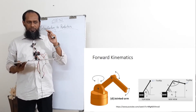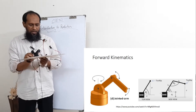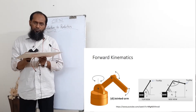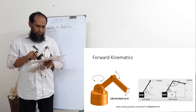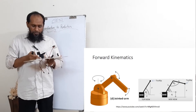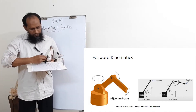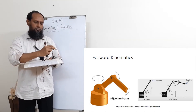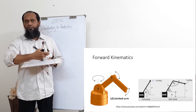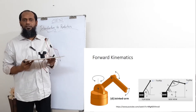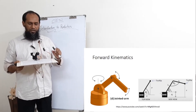What is forward kinematics? Forward kinematics means if we know the angle values — for example, how many degrees each joint has moved — then we will be able to calculate the position of the end point. That means we can calculate where the tip is. That is called forward kinematics.